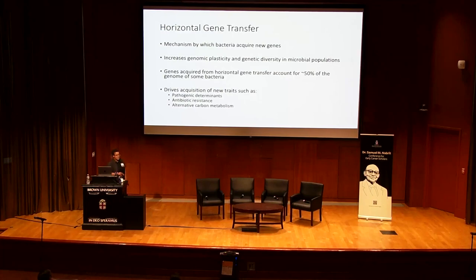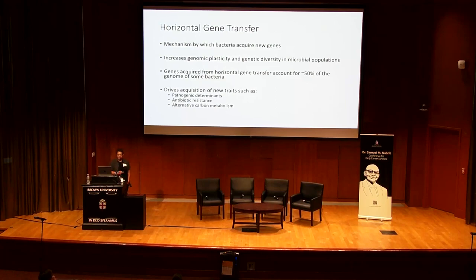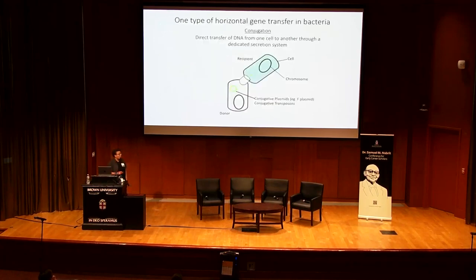This has very important implications for human health, as it drives the acquisition of new traits such as pathogenic determinants, antibiotic resistance, and alternative carbon metabolism. There are a few mechanisms of horizontal gene transfer used by bacteria. I study one type, which is conjugation — a contact-dependent transfer of DNA through a specialized secretion system into a recipient cell.